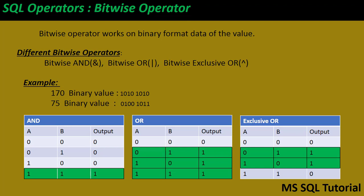Let me explain what the different bitwise operators are. We have bitwise AND, bitwise OR, and bitwise exclusive OR. These are totally different from the normal AND or OR. Let me show you an example of how they work.